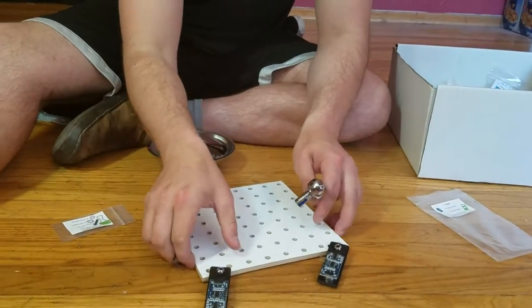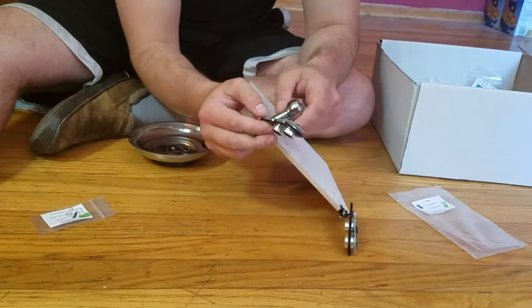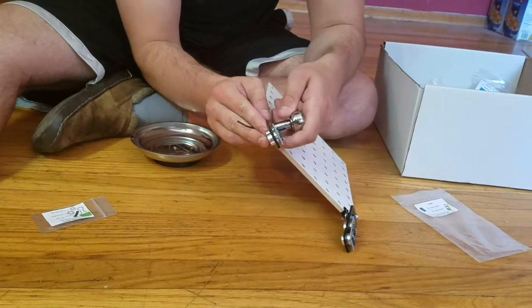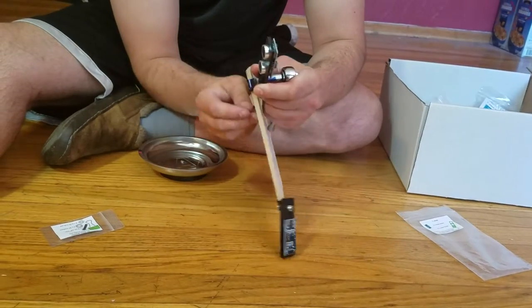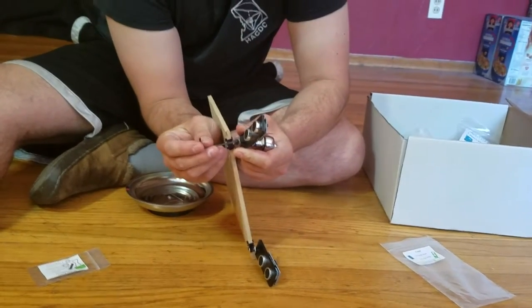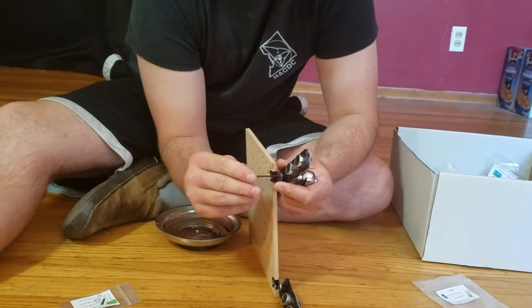And we'll take the allen wrench and the socket and we'll put the socket over the bolt. And then we'll take the allen wrench and we'll start tightening down.